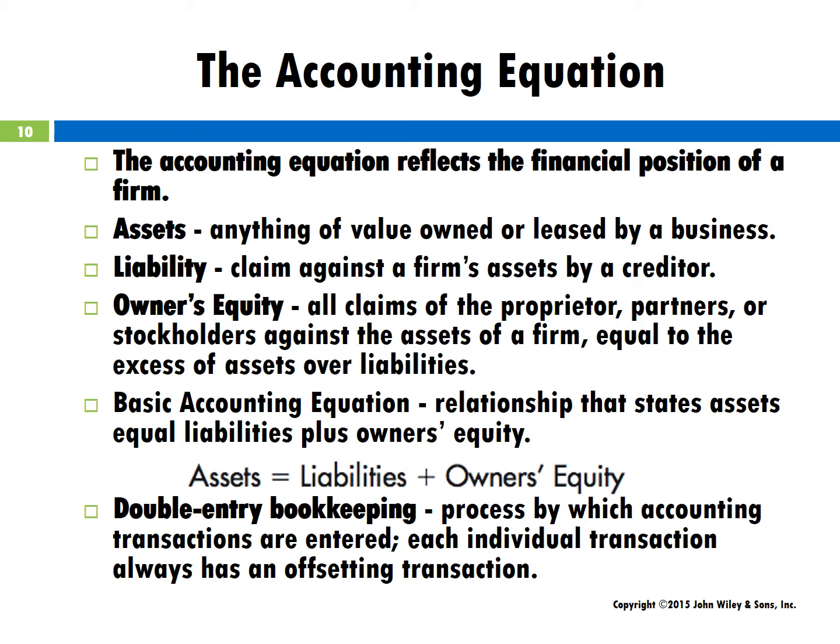The backbone of accounting is the accounting equation, which consists of three fundamental terms and reflects the financial position of a firm. Assets are anything of value owned or leased by a firm. Liabilities are anything a business owes to creditors. Owner's equity is the owner's initial investment in the business plus profits not paid out to owners as cash dividends. A strong owner's equity position is evidence of a firm's financial strength and stability. Assets always equals liabilities plus owner's equity.